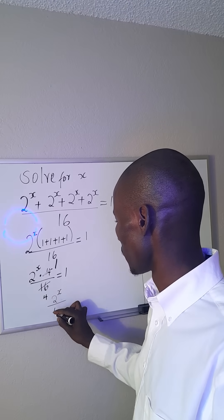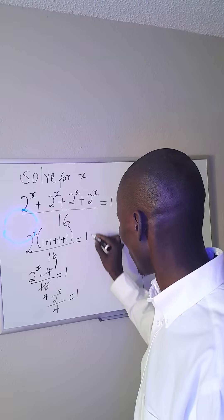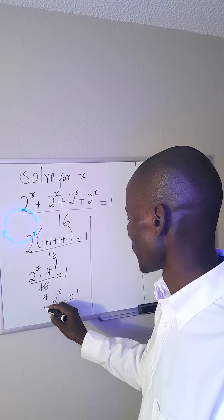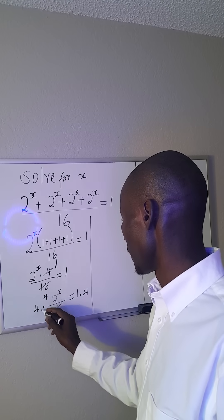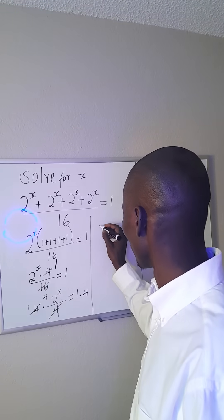What do I do? I can multiply this side by 4, multiply this side by 4, so this and this will go. 2^x is the same as 4.